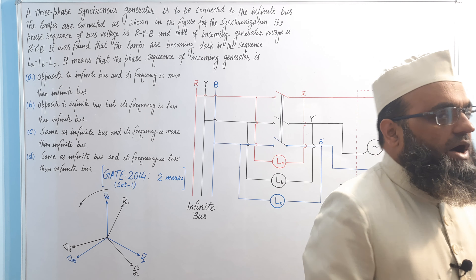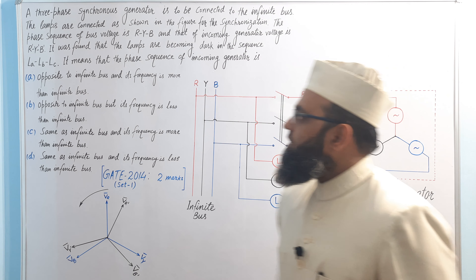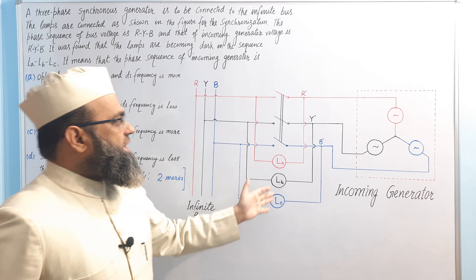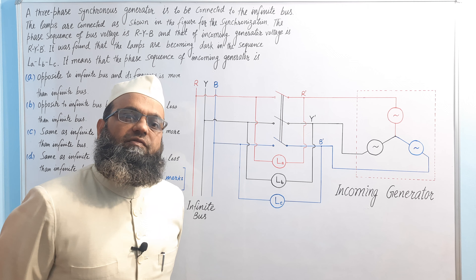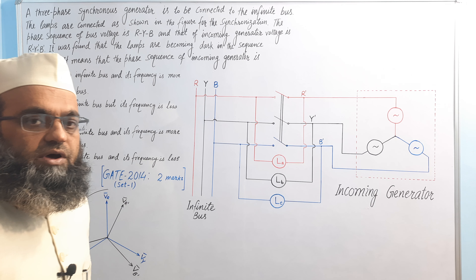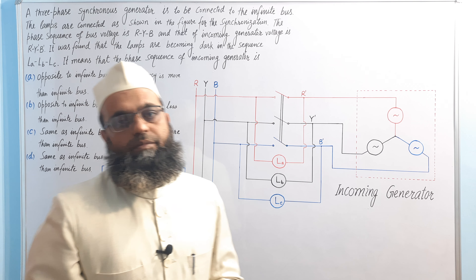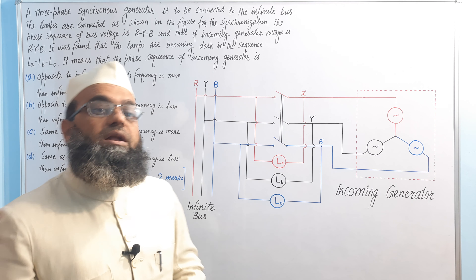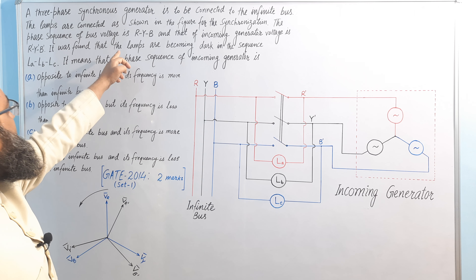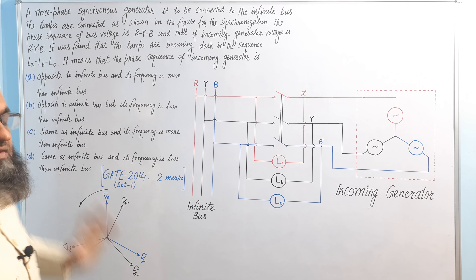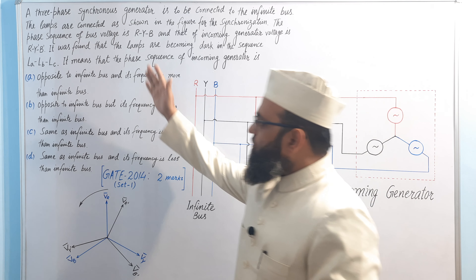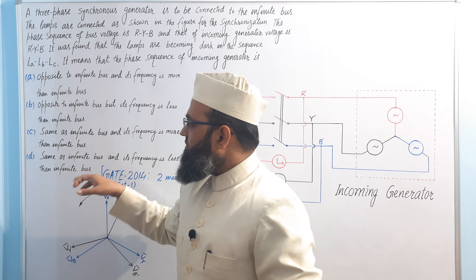For answering such questions, remember the basic concept. The three lamps are directly connected to respective phases of the alternator and infinite bus — no cross connection. This means the two phase sequences will be the same only if all lamps become dark together. But in this problem the lamps become dark in sequence, meaning the phase sequences are not equal. So the two 'same' options are omitted.